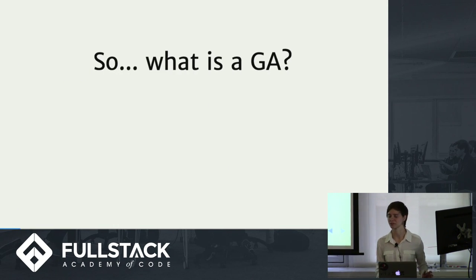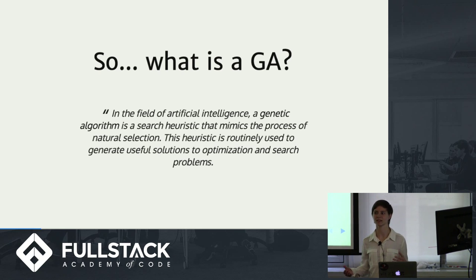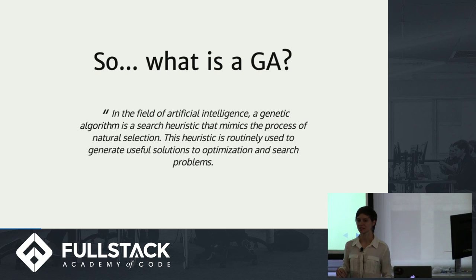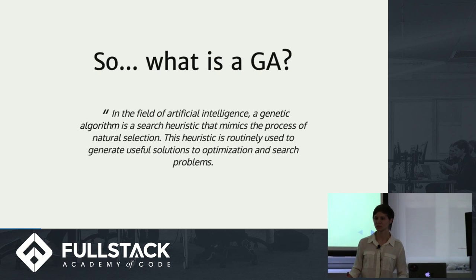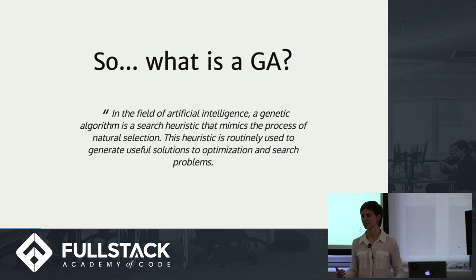What is a genetic algorithm? It's mainly a search heuristic that mimics the process of natural selection. A heuristic is an algorithm that doesn't necessarily guarantee you the best solution or the perfect solution, but a good enough solution. These can be really useful when you don't exactly know what the best solution is. You can think of the way natural selection works in nature — it's not moving towards a specific goal; it's adapting slowly to its current environment.